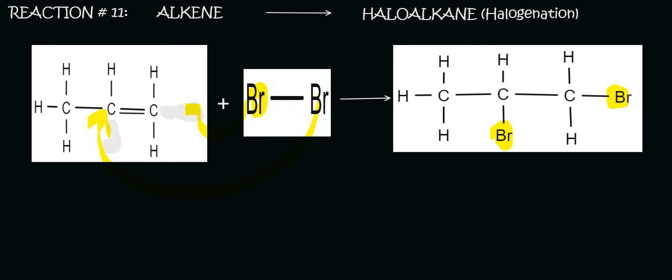So we converted an alkene into a haloalkane by adding two halogens whereas with reaction number 10 we added a hydrogen and a halogen and that's why we used HCl instead. So that's it for reaction 10 and 11. Only two more to go. That is awesome. Thank you very much for watching.